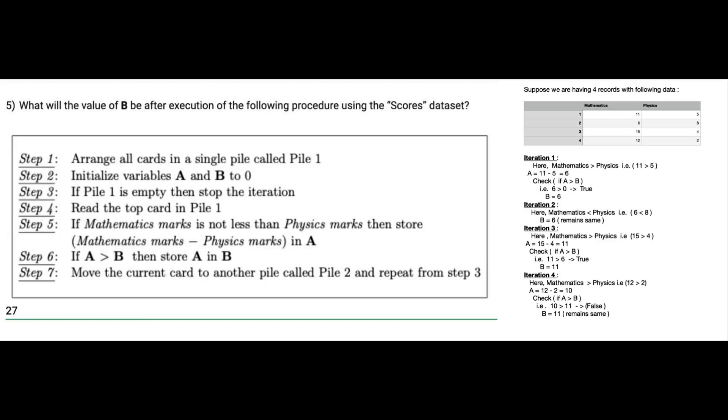Hello everyone. The main condition given in this question is that in step 5, if mathematics marks is not less than physics marks, then store mathematics marks minus physics marks, which is their difference, in A. Then in step 6, if A is greater than B, then store A in B.